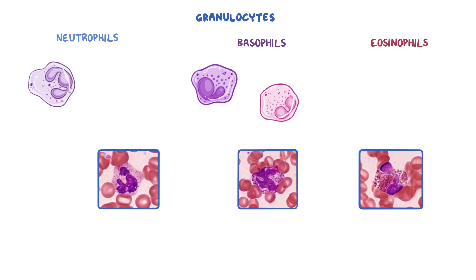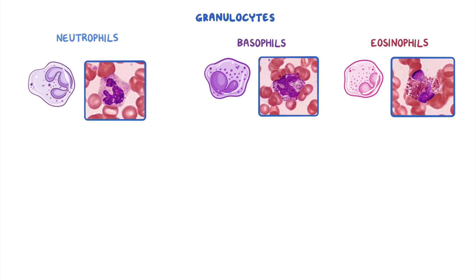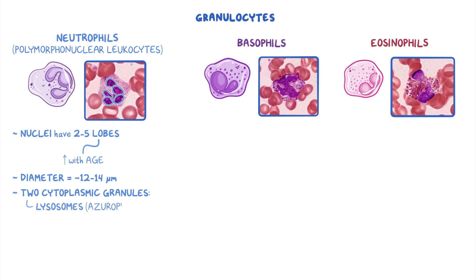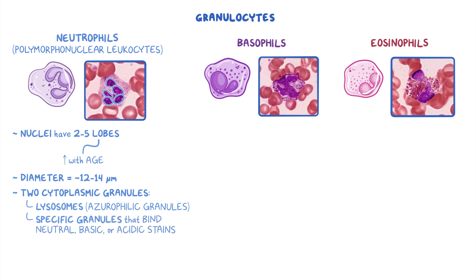Let's first take a closer look at the granulocytes. Neutrophils are also called polymorphonuclear leukocytes, or PMNs, because of their distinct nuclei, which have 2-5 lobes. The number of lobes will increase as the cell ages, so a young cell may only have 2 lobes, while an older cell is more likely to have 5 lobes. The diameter of neutrophils is about 12-14 micrometers, and they contain an abundant amount of two major types of cytoplasmic granules: lysosomes, often called azurophilic granules in blood cells, and specific granules that bind neutral, basic, or acidic stains and have specific functions.